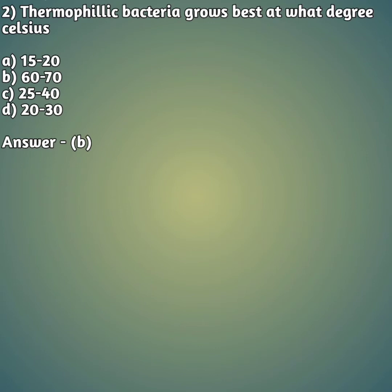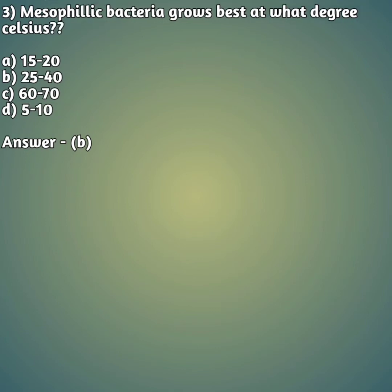Moving on to our second question: thermophilic bacteria grow best at what degree Celsius? Option A: 15 to 20, option B: 60 to 70, option C: 25 to 40, option D: 20 to 30. The right answer is option B — thermophilic bacteria grow best at 60 to 70 degrees Celsius.